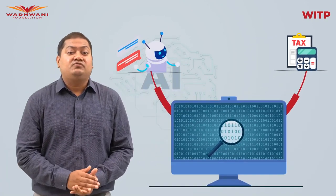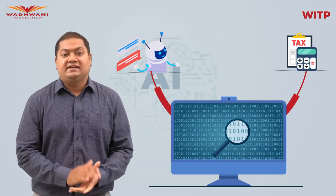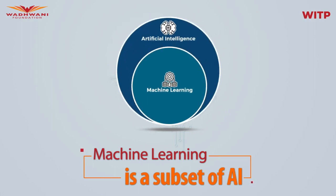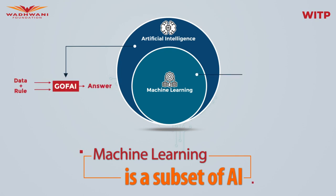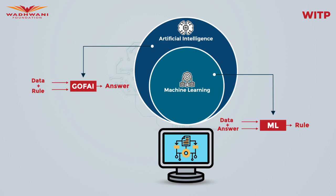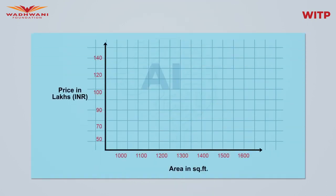From old-fashioned, let's move to new age — machine learning. Machine learning is a subset of AI, and most of the fascinating AI examples we hear about are part of this subset. One important difference between GOFAI and machine learning is that while GOFAI is static, machine learning is dynamic. Machine learning algorithms can learn the rules from the data itself and evolve those rules further as they encounter more and more data.